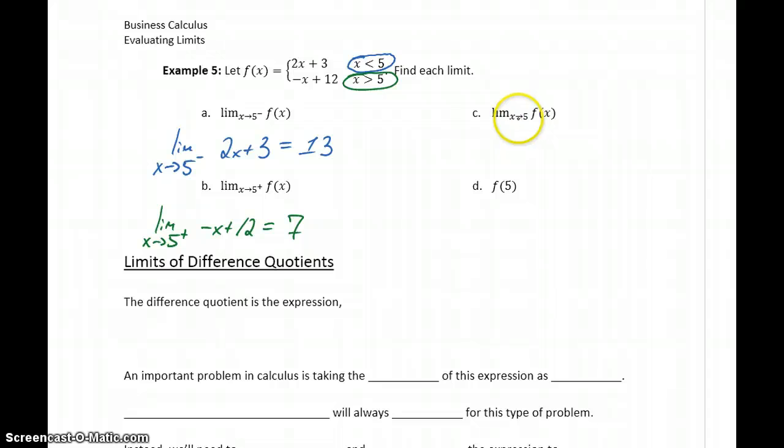In this case we would say that the limit for this function as X approaches 5 does not exist. This comes back to that idea of the theorem for our one-sided limits: since the left and right hand limits are not equal to each other, then the limit as X approaches 5 does not exist.